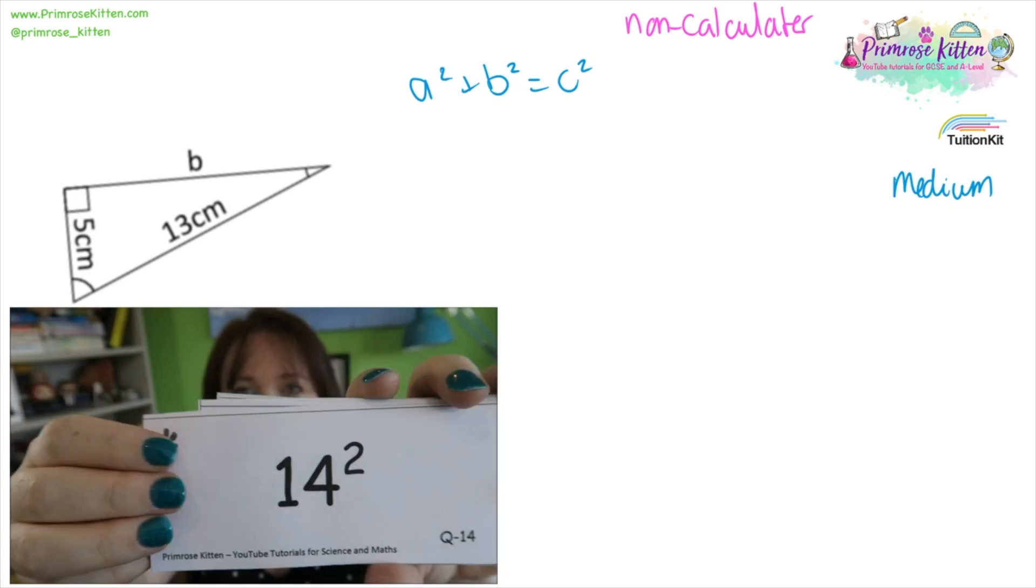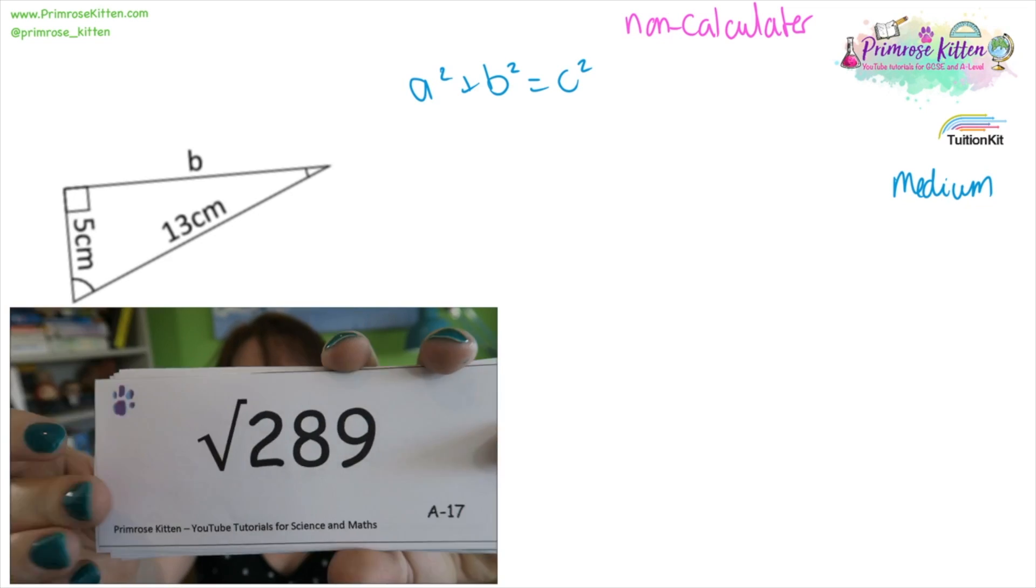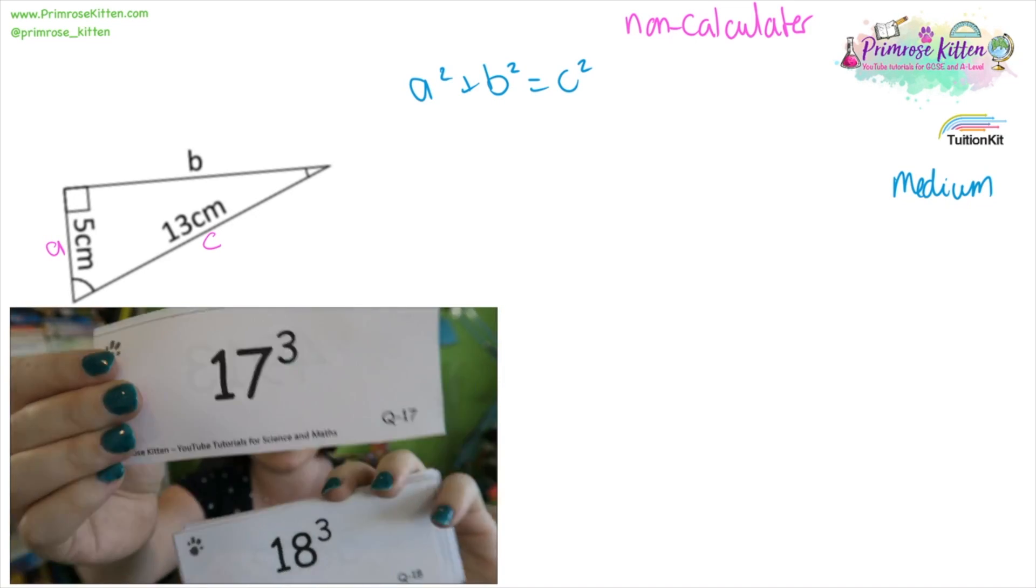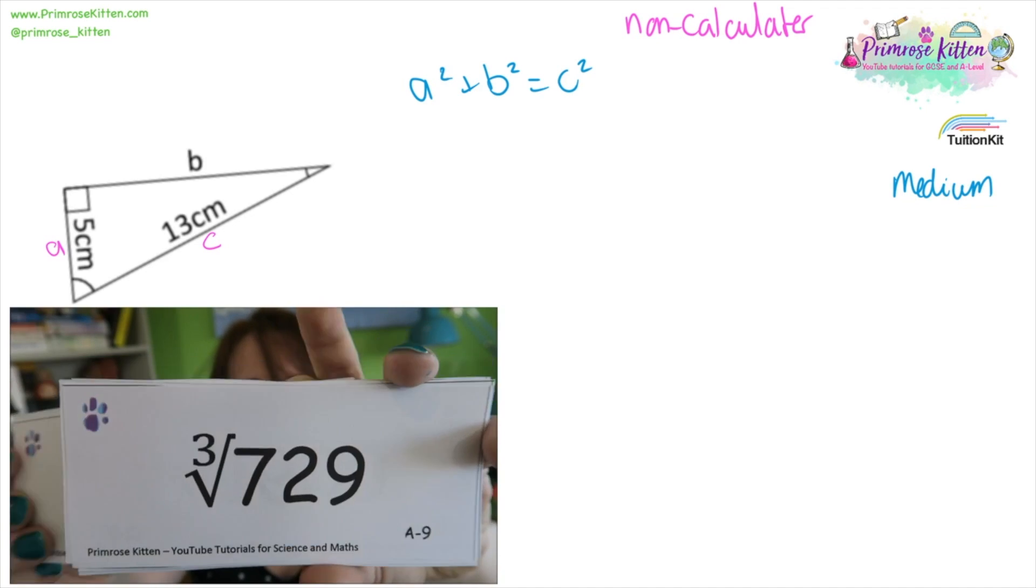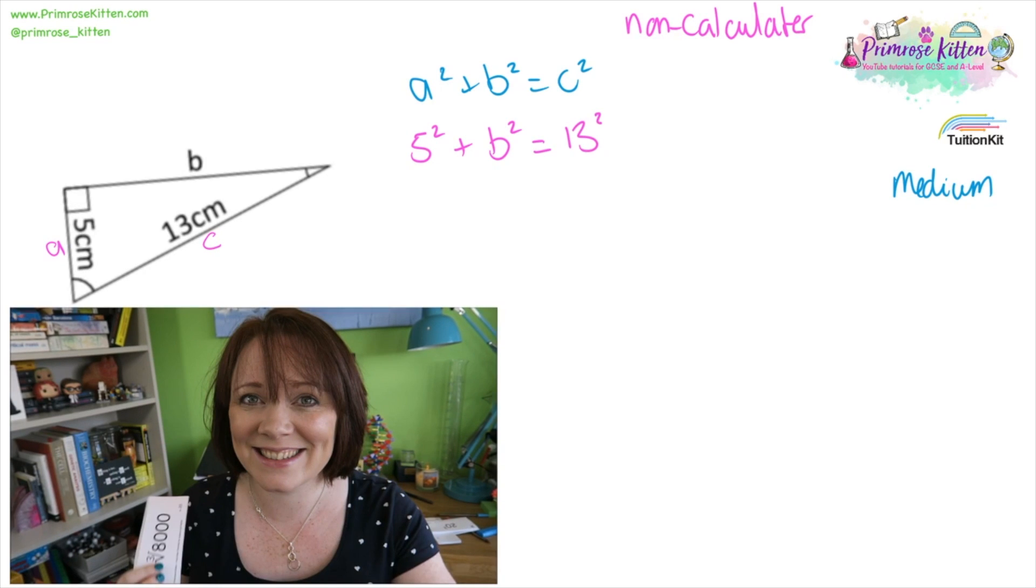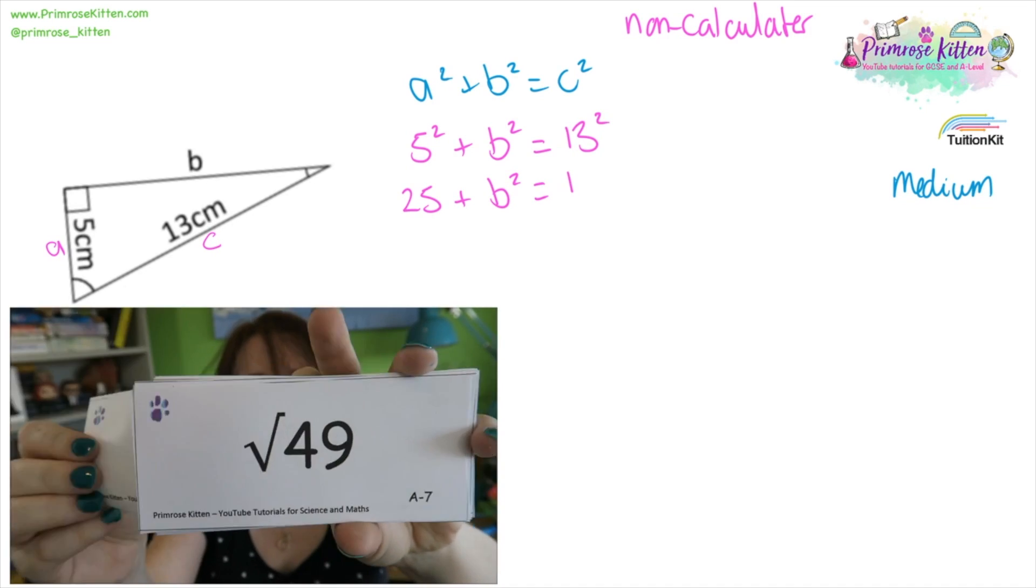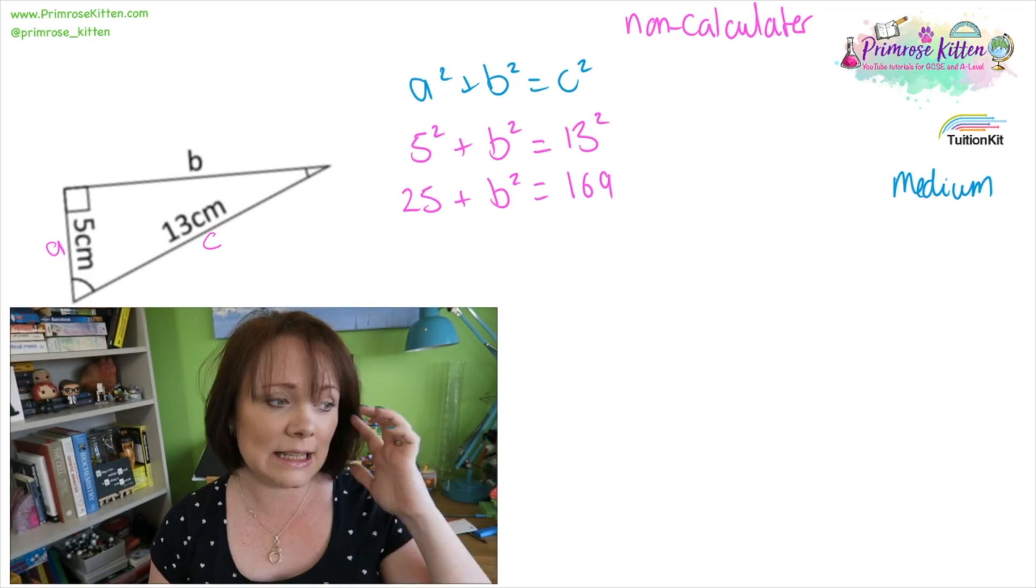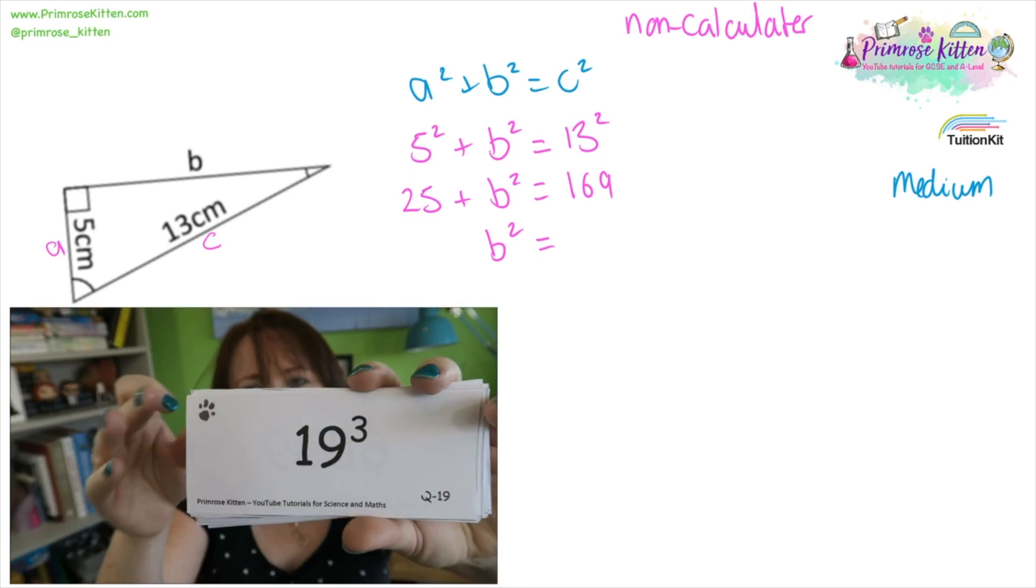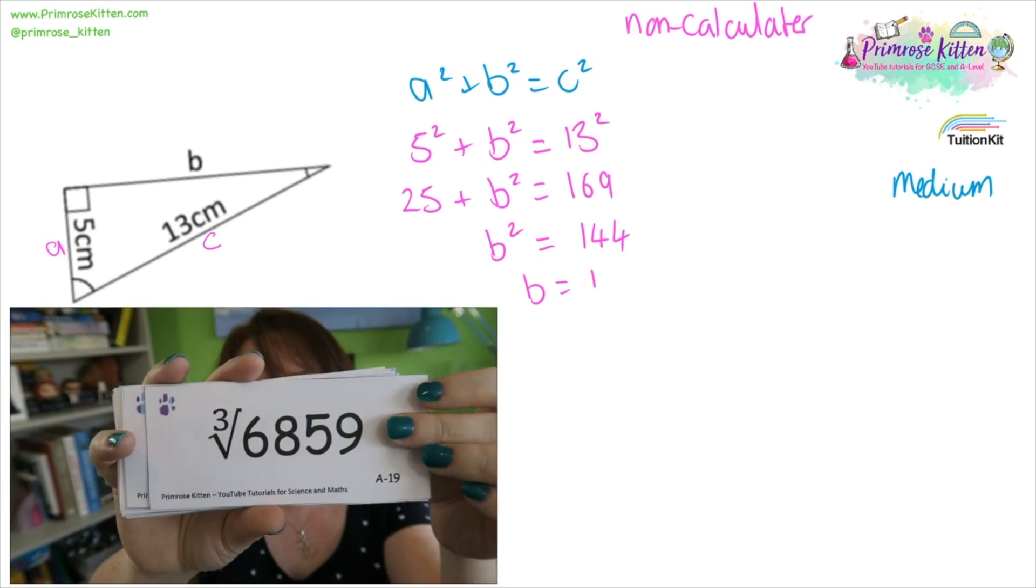This is another one I would like you to try and do without your calculator because all the numbers involved are common numbers. For this one, I'm going to show you putting the numbers in first. Here we have C, the hypotenuse opposite the right angle, and A. So A squared, which is 5 squared, plus B squared equals C squared, 13 squared. 5 squared, 25, plus B squared equals 13 squared, 169. We can then take 25 over to the right hand side. So we have B squared equals 169 minus 25, 144. For B, we need to do the square root of 144, which is 12.